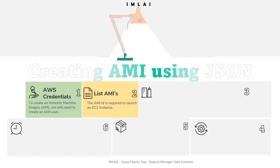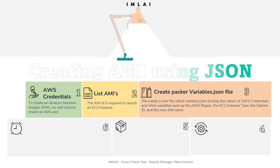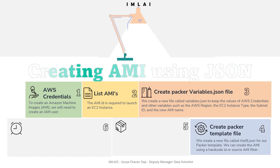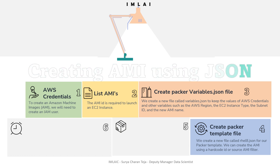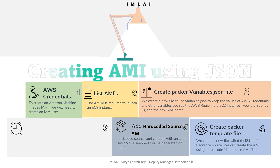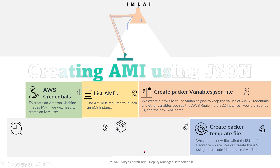The third step is to create a packer-variables.json file where we mention all the variable information: AWS credentials, AWS region, EC2 instance type, subnet ID, and AMI name. The fourth step is to create a Packer template where you mention the builder and provisioner sections. While creating the Packer template, we will use a hard-coded source AMI — you copy one of the AMIs listed in step two and use it in the Packer template file.